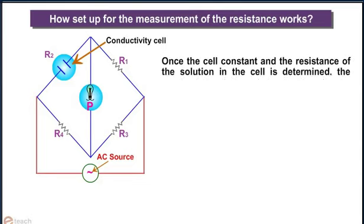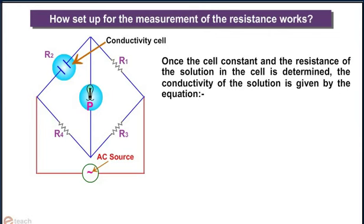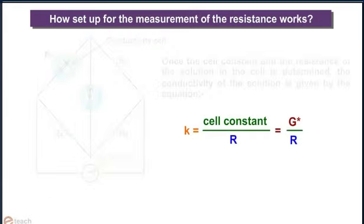Once the cell constant and the resistance of the solution in the cell is determined, the conductivity of the solution is given by the equation: κ = cell constant/R = G/R.